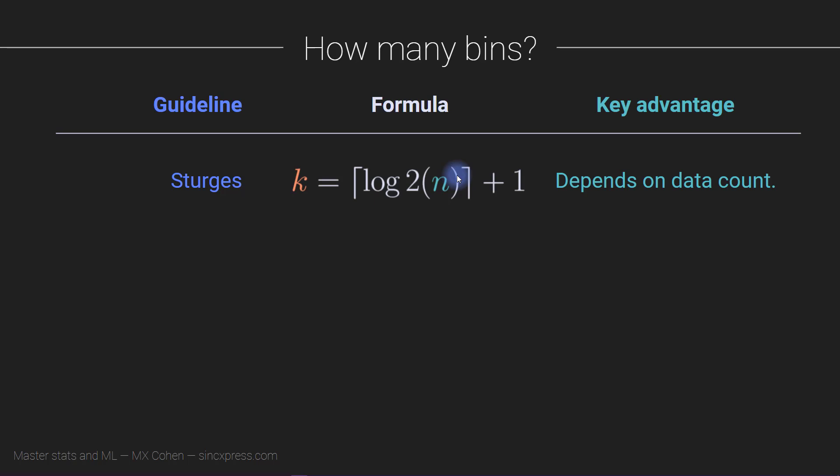So you can see that the number of bins will increase as the number of data points you have increases. And you can also see that this is a non-linear function. Remember, the logarithm goes up pretty steeply in the beginning for small numbers, and as x, or in this case n, gets further and further to the right, the increase slows down. So having a larger and larger n is not necessarily giving you a much larger number of histogram bins. So this is one advantage of Sturges's rule: it depends on the data count, so as the data gets larger, the number of bins gets larger.